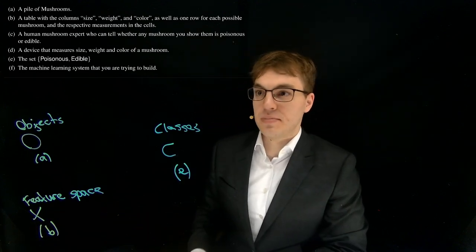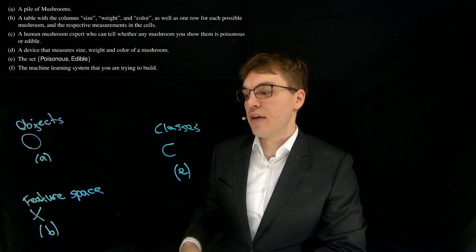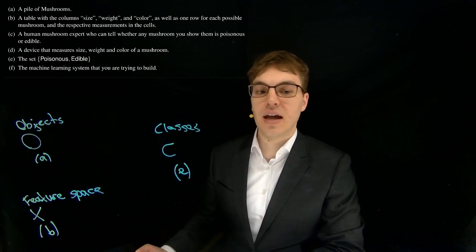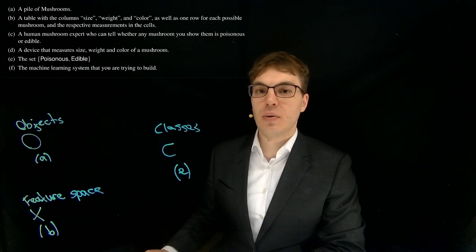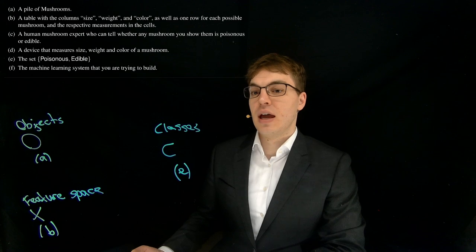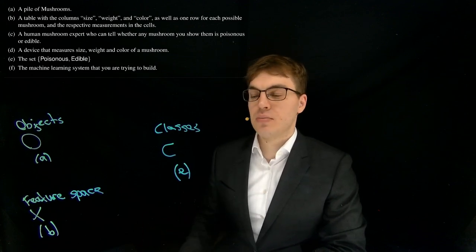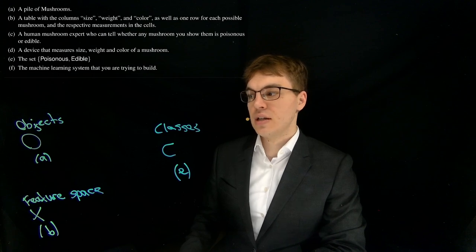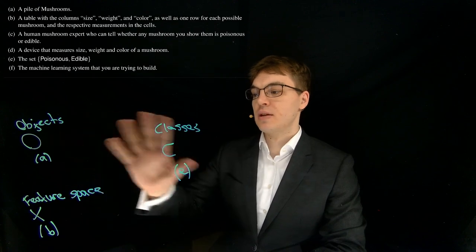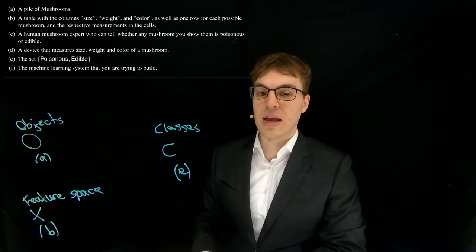What does this mean? Well, we have a space that consists of three dimensions: size, weight and color. And we can represent objects in this feature space mathematically. This allows us to build a system that does this classification. So now we have to define the maps between those spaces here.